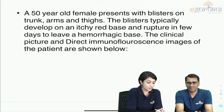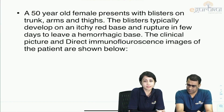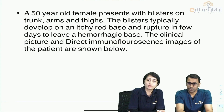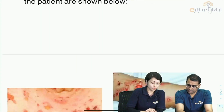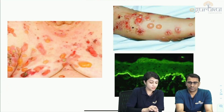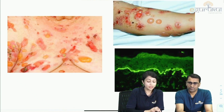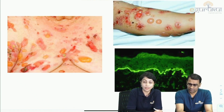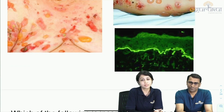The question for today's session involves a 50-year-old female presenting with blisters on the trunk, arms, and thighs. The blisters typically develop on an itchy red base and rupture within a few days, leaving a hemorrhagic base. A clinical picture and direct immunofluorescence (DIF) image of the patient have been provided, showing the blisters and their healing pattern.